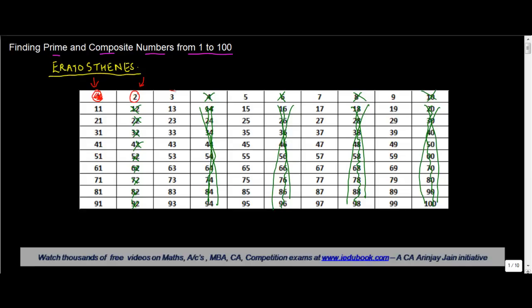Then we move on to the next one which is 3. 3 again we know is a prime number. So we again cross out all the multiples of 3: 6, 9, 12, 15, 18, 21, 24, 27, 30, 33, 36, 39, 42, 45, 48, 51, 54, 57, 60, 63, 66, 69, 72, 75, 78, 81, 84, 87, 90, 93, 96, 99.